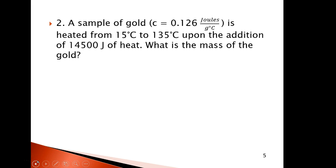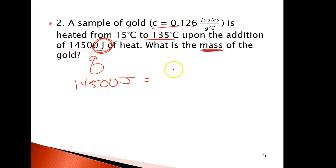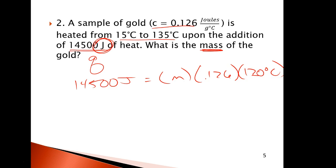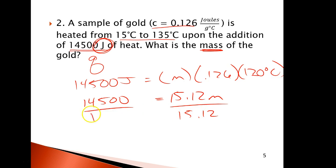This one is a little different. I'm giving you the specific heat, the temperature change, but not the mass — that's what you're solving for. The unit on that number tells you it's the heat. So 14,500 joules equals M times 0.126 times the temperature change of 120 degrees. Doing the algebra — dividing by 15 — I get a mass of 959 grams.